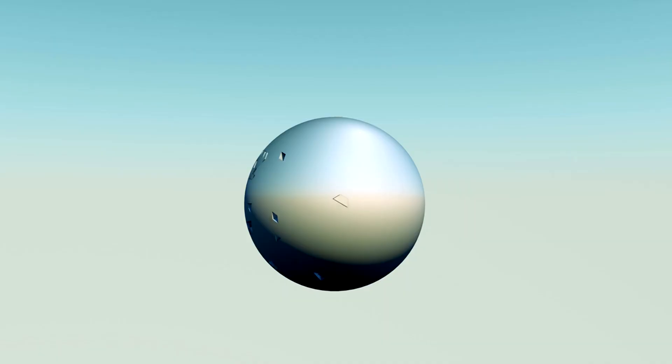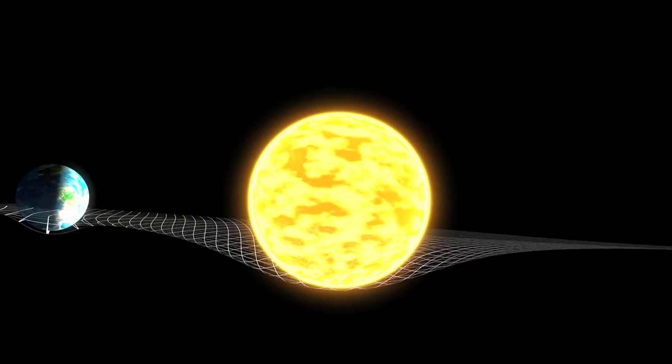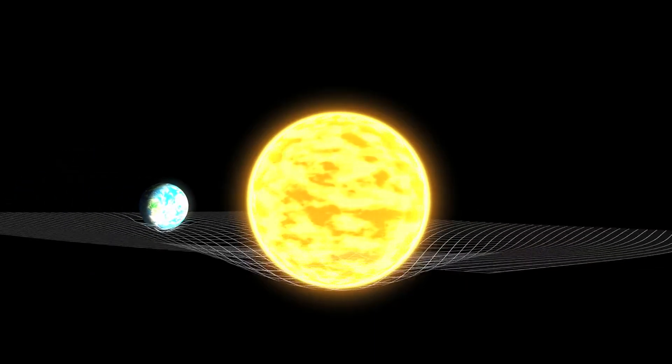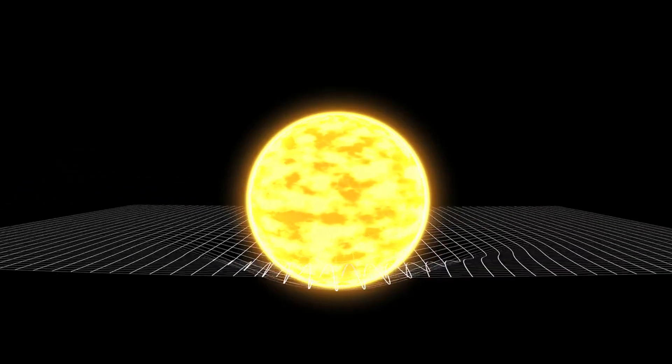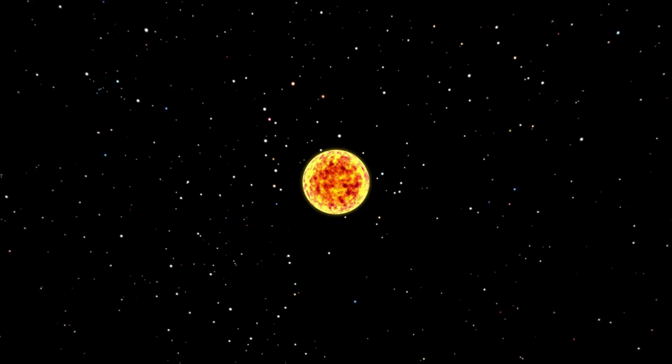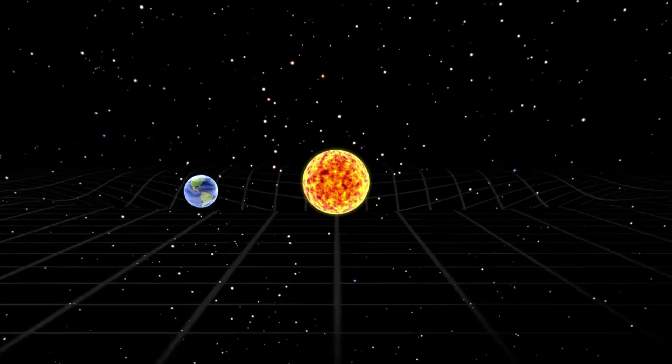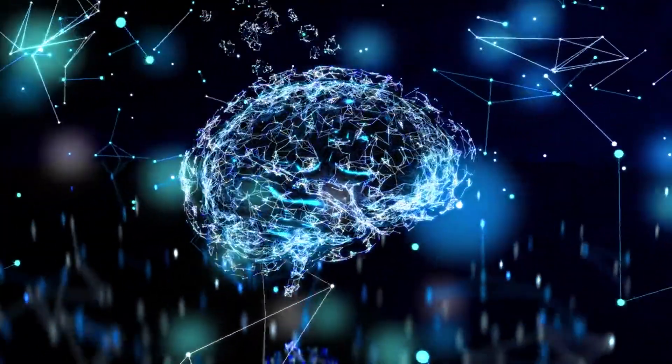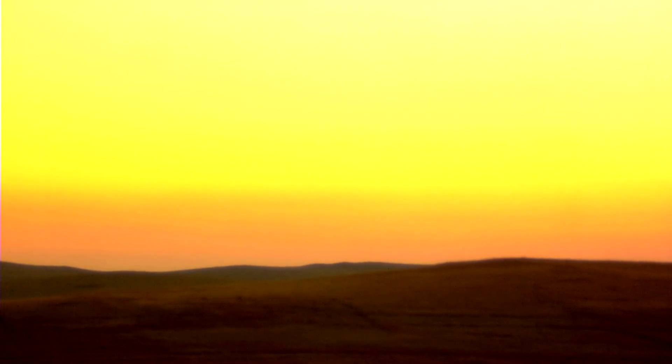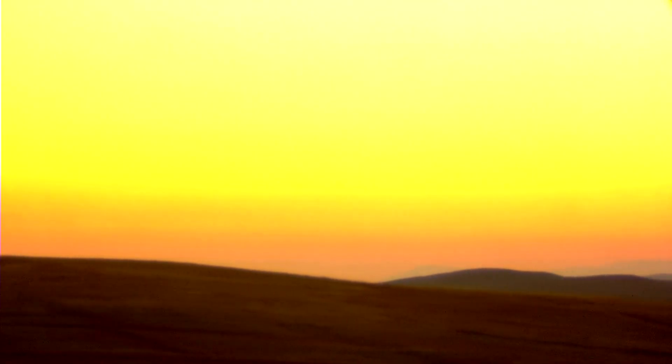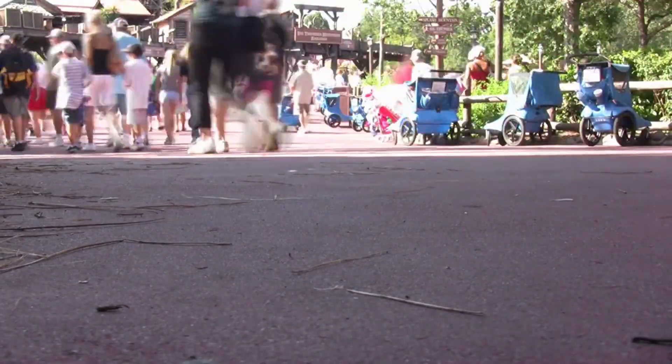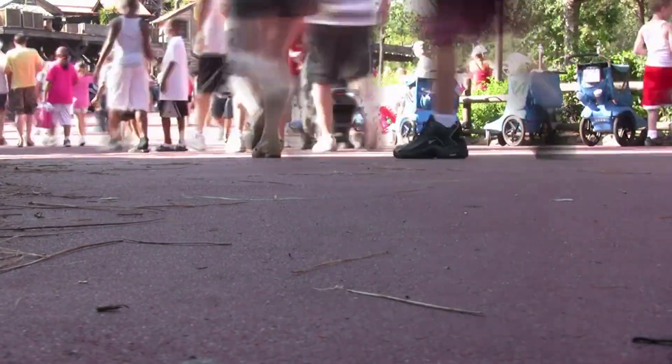And if you're not already questioning reality, try this. Time moves slower the closer you are to Earth's surface. It's called gravitational time dilation, proven by Einstein and confirmed by GPS satellites. The stronger gravity is, the slower time ticks. That means your head ages faster than your feet. Literally. If you lived your whole life on a mountain, you'd be ever so slightly older than someone who lived at sea level. We're all experiencing time at slightly different speeds, depending on where we stand.